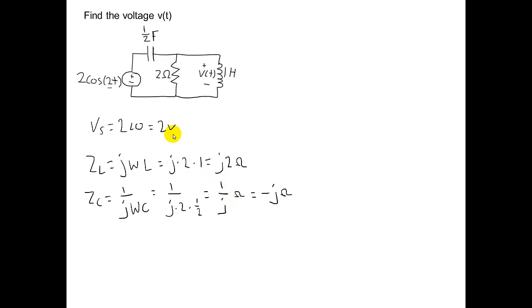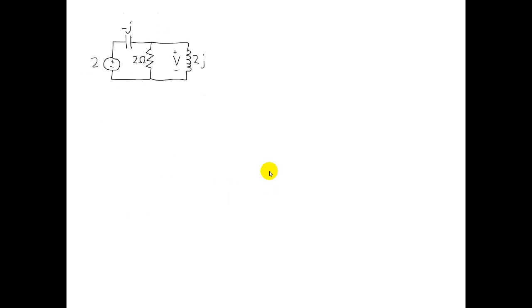After finding the phasor form of the voltage source and both impedances, we can rewrite the circuit in its equivalent phasor form, as shown here.